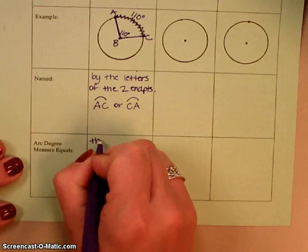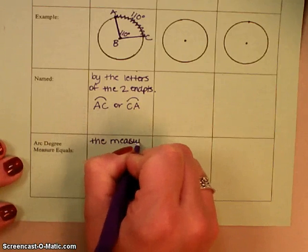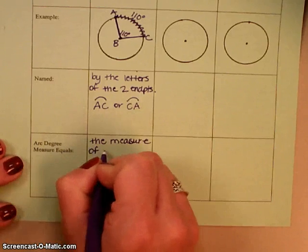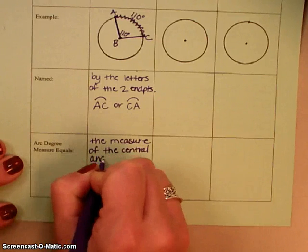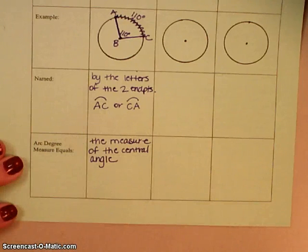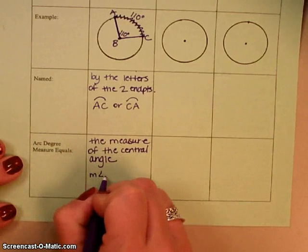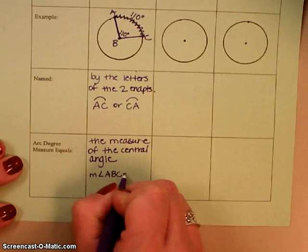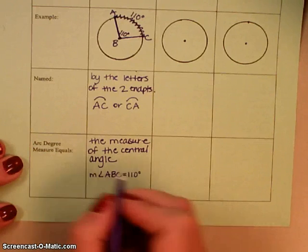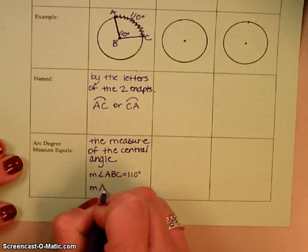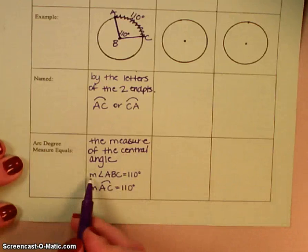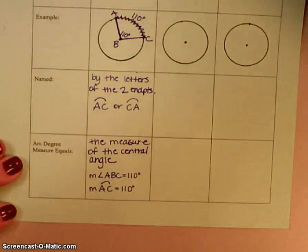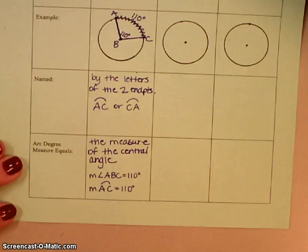Now we already kind of talked about this, but as far as degree measure goes, the arc degree is going to be the same as the central angle. So the measure of the central angle is going to be the same as the measure of the arc. So for example, I said that the measure of angle ABC is 110. Well, that would also mean that the measure of arc AC equals 110. Remember that little M means the measure of the angle, so that means we're just talking about degrees there. So that is minor arcs.